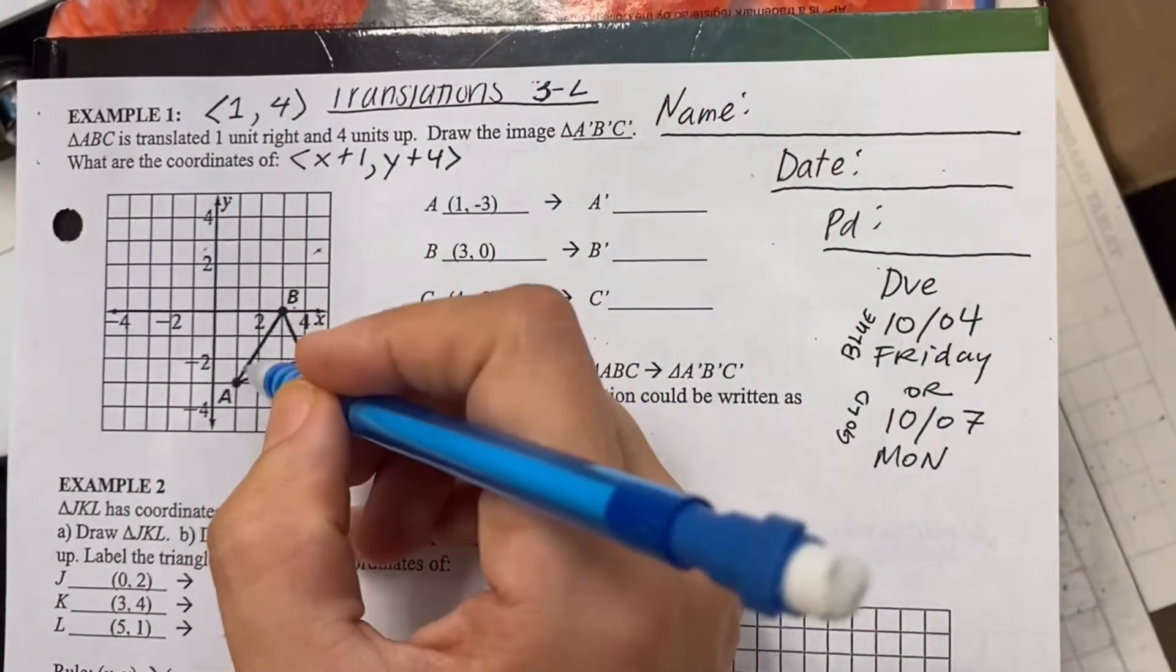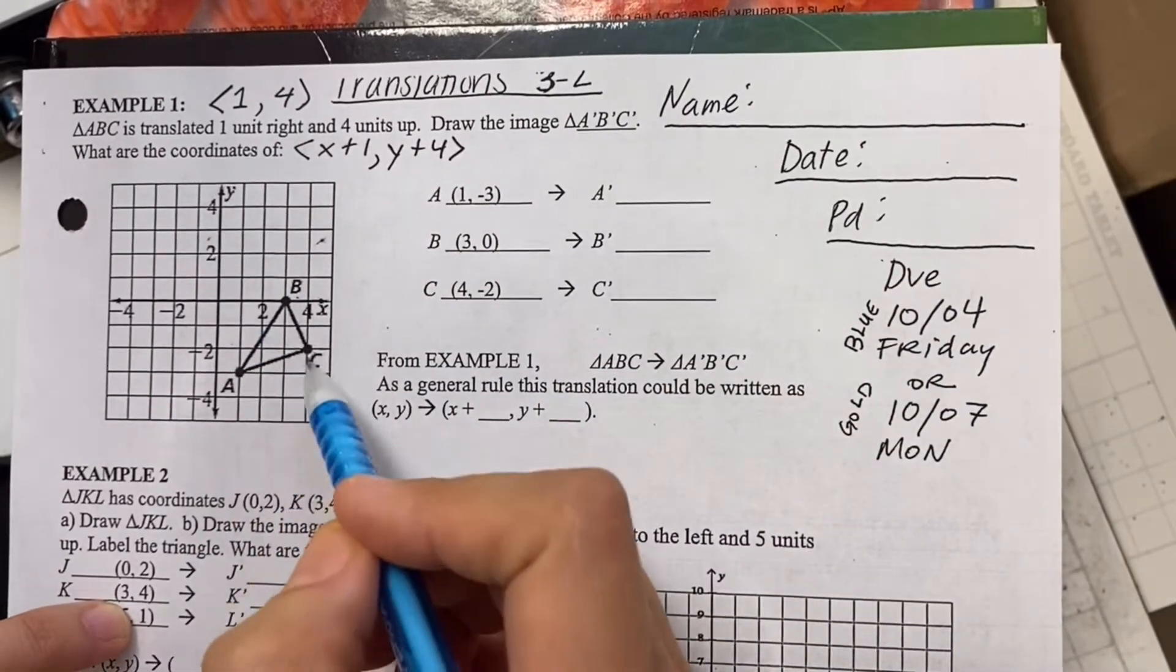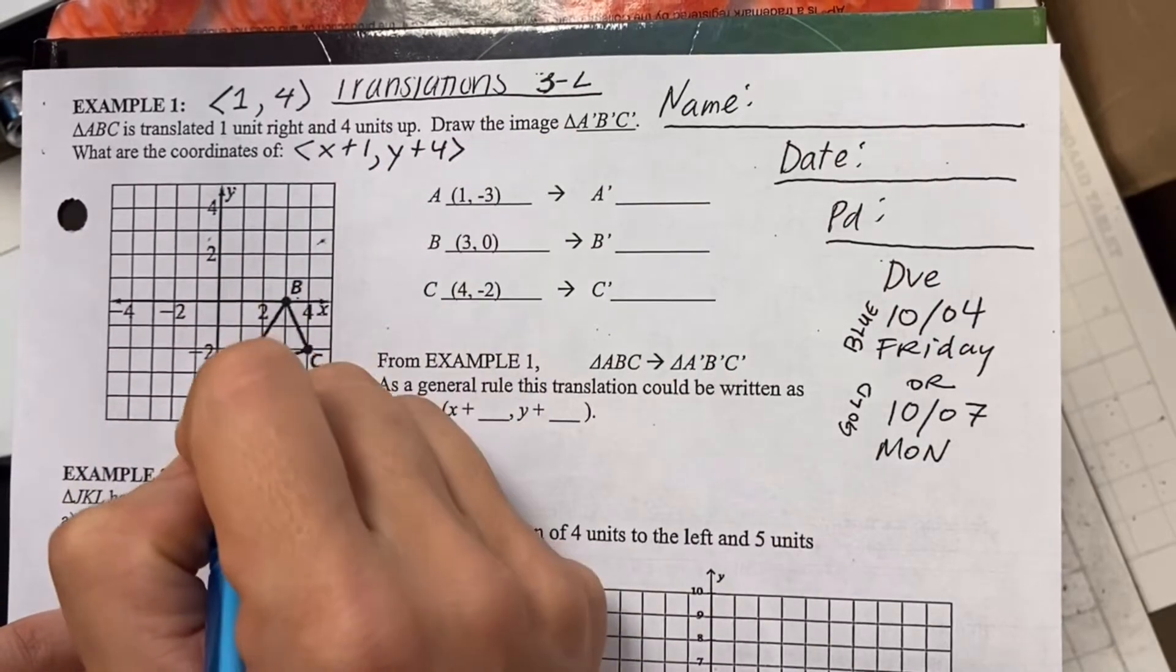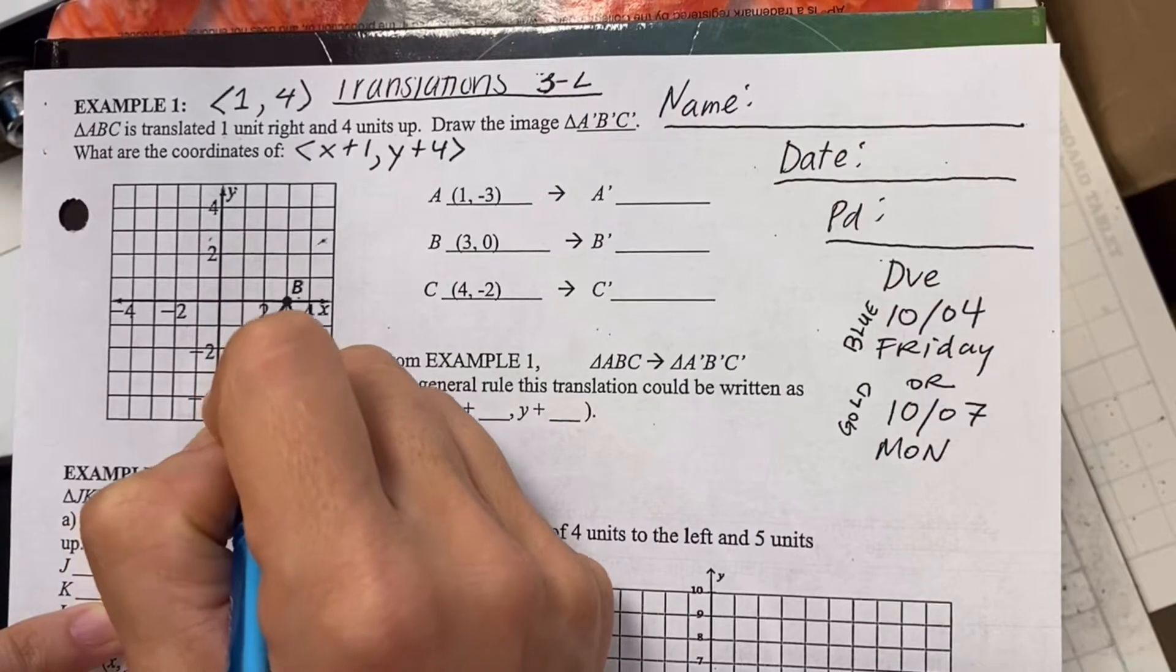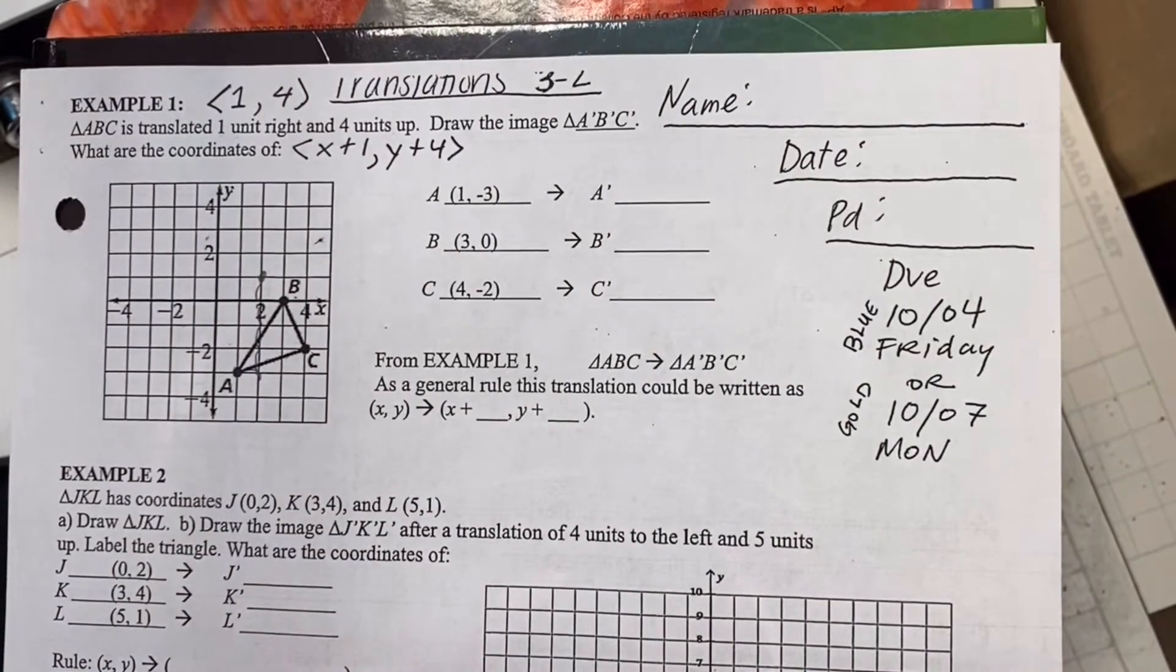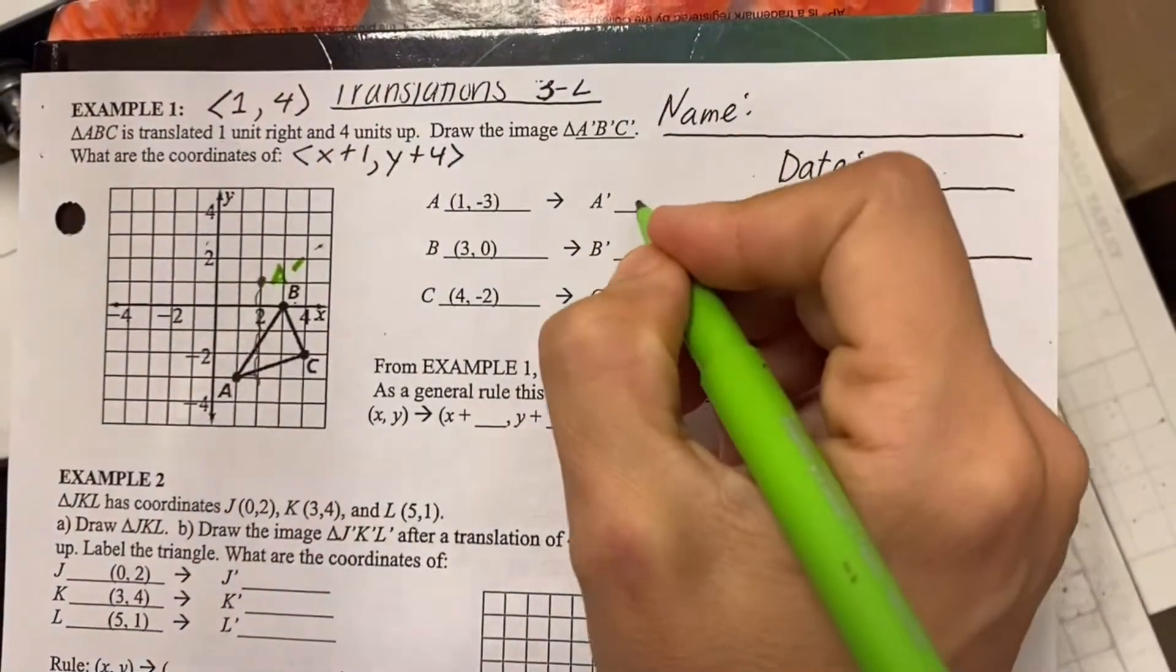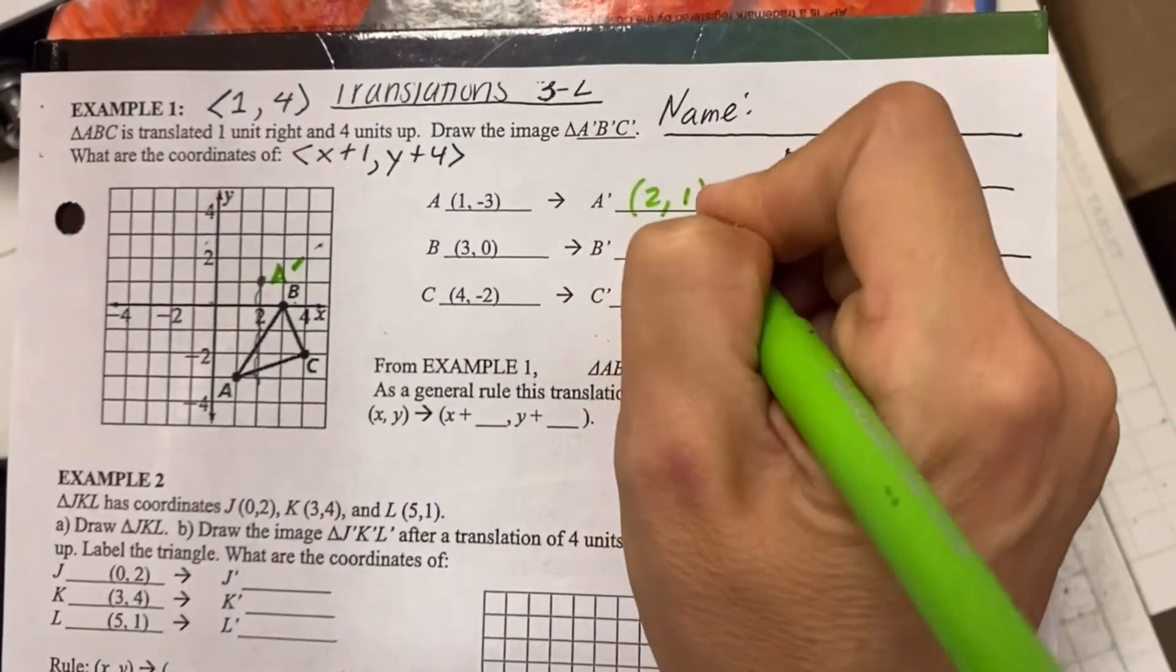It says draw it. So I can think about this as three soldiers. Each soldier gets their orders to go one unit right and four up. So A says okay, I'm supposed to go one unit right and four up. One, two, three, four. That's where A's new location is and we call that A prime. So I can read that, it looks like two, one.